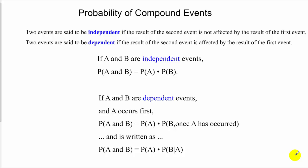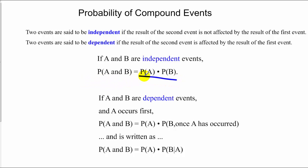Next, we move to probability of compound events — compound meaning more than one, typically. Two events are going to be what we call independent if the second event is not affected by the first. So if we have two events, A and B, that are independent and we want to find the probability of A and B occurring, we multiply those two probabilities together.